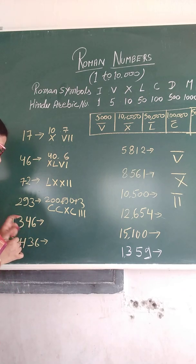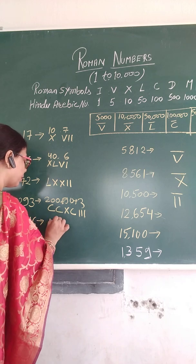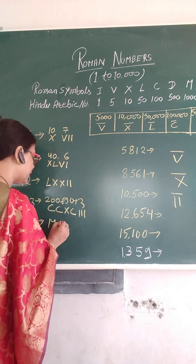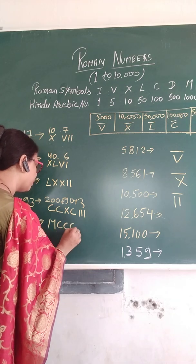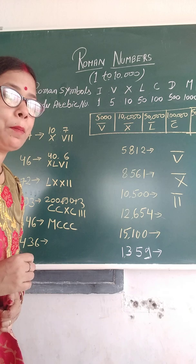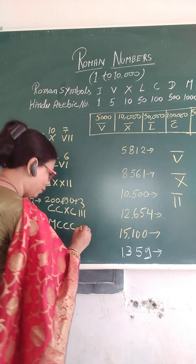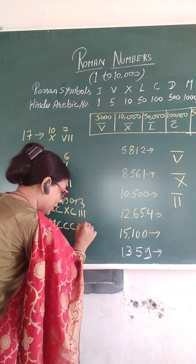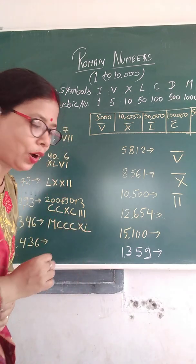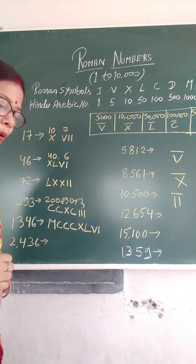1346: 1000 is M, and 300 is 3C. 46 means 40 plus 6. 40 means 50 minus 10 — L ka P, then X back. And 6 is 5 plus 1 — V, and I aage. So 1346 is MCCCXLVI.